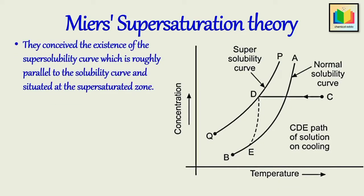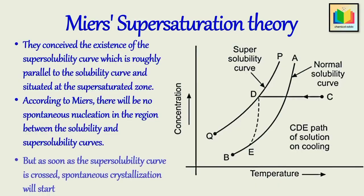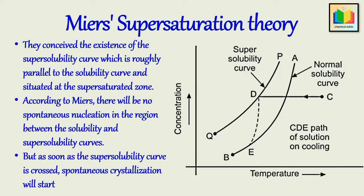They conceived the existence of the so-called super solubility curve, which is roughly parallel to the solubility curve and situated at the supersaturated zone. According to Miers, there will be no spontaneous nucleation in the region between the solubility and super solubility curves, but as soon as the super solubility curve is crossed, spontaneous crystallization will start.